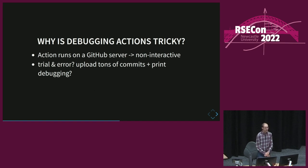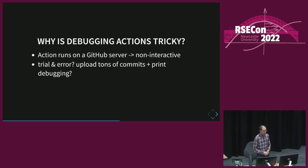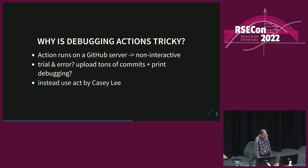So why is debugging GitHub Actions tricky? The whole thing runs on a server, so you don't have interactive access and can't really play around and see what's going on. As I outlined in the intro, there's trial and error — you can upload tons of commits, wait a long time, and use print debugging. But instead, it's way better to use ACT, which is a tool written by Casey Lee and a bunch of contributors. We'll take a look at that now.